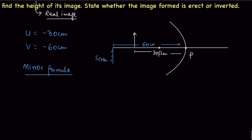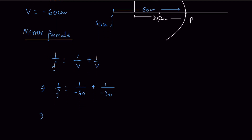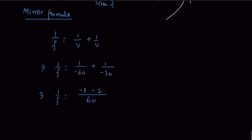The mirror formula is: 1/f = 1/v + 1/u. Substituting the values: 1/f = 1/(−60) + 1/(−30) = −3/60. Therefore, f = −60/3 = −20 centimeters. So we have found the focal length.